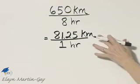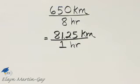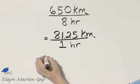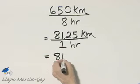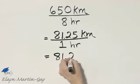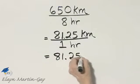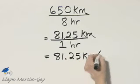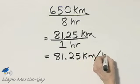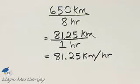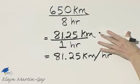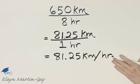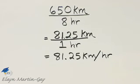Now you can leave it like this — this is a unit rate. Or you can write it as 81 and 25 hundredths kilometers per one hour, or per hour. You can write it either way as a unit rate.